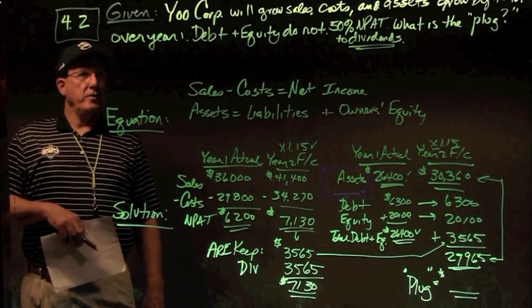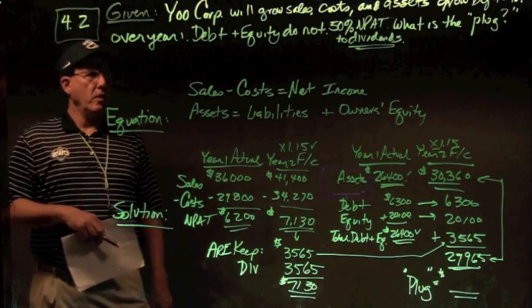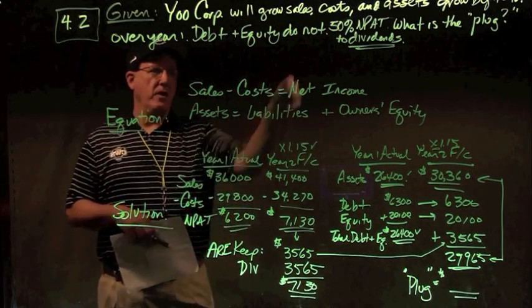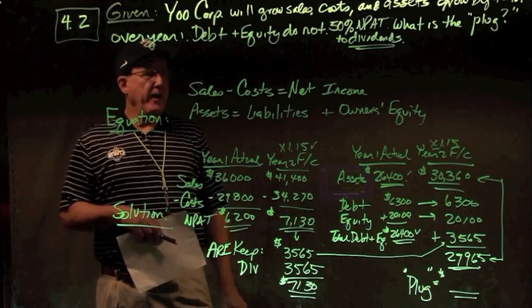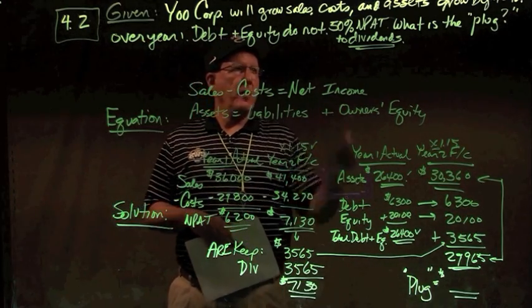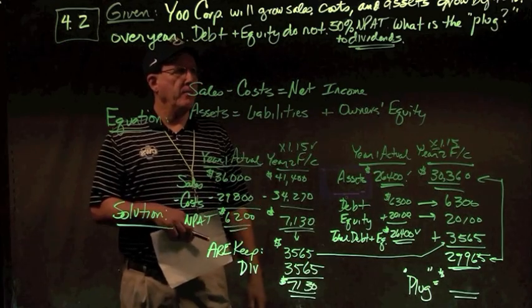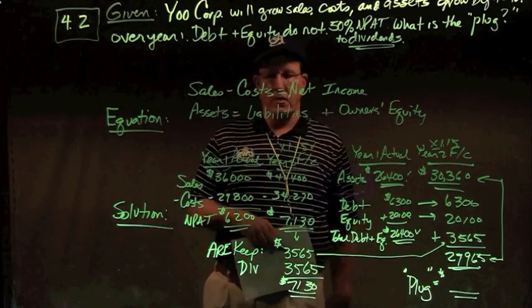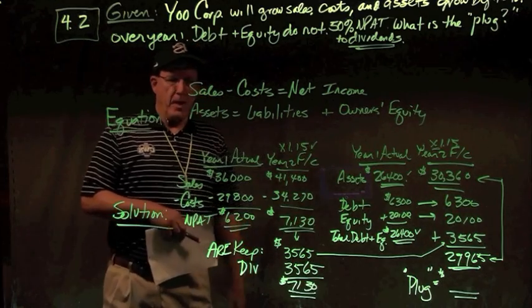In problem 4.2, U-Corp, this time we'll grow sales costs and assets at 15%, but debt and equity do not. So we freeze debt and equity, no more debt and equity. This time different also, we're going to pay half of our net income out in dividends and keep half. Now what is the plug?